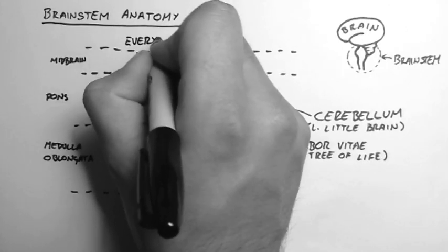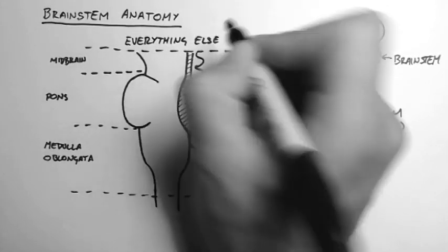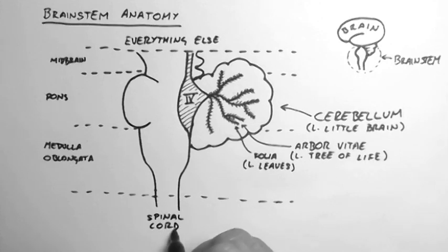Up above the brain stem is everything else. And down here is the spinal cord.